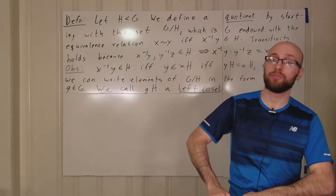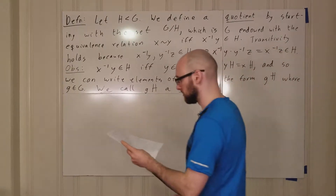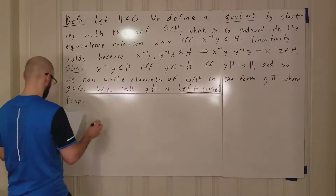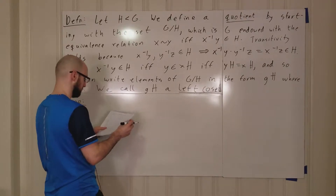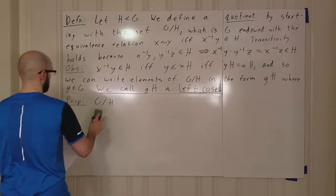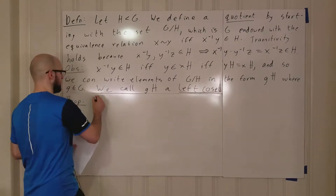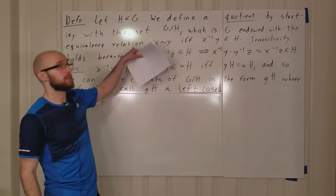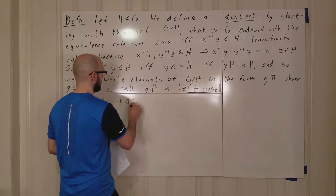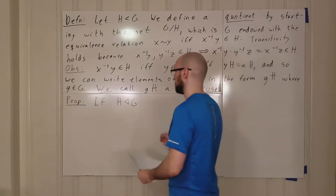Let's finish our discussion of the quotient group, because so far we only have a set. We have our proposition: G mod H — but I should start with the key condition. Having H be a subgroup of G is not enough; we need H to be a normal subgroup of G. This is another reason why normal subgroups are really important.